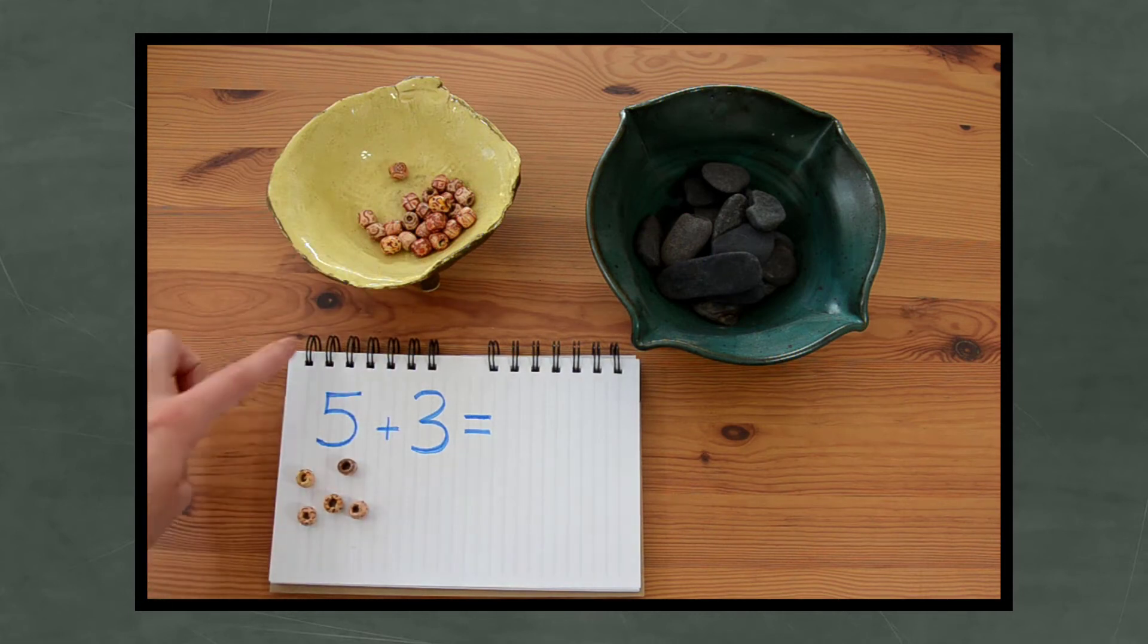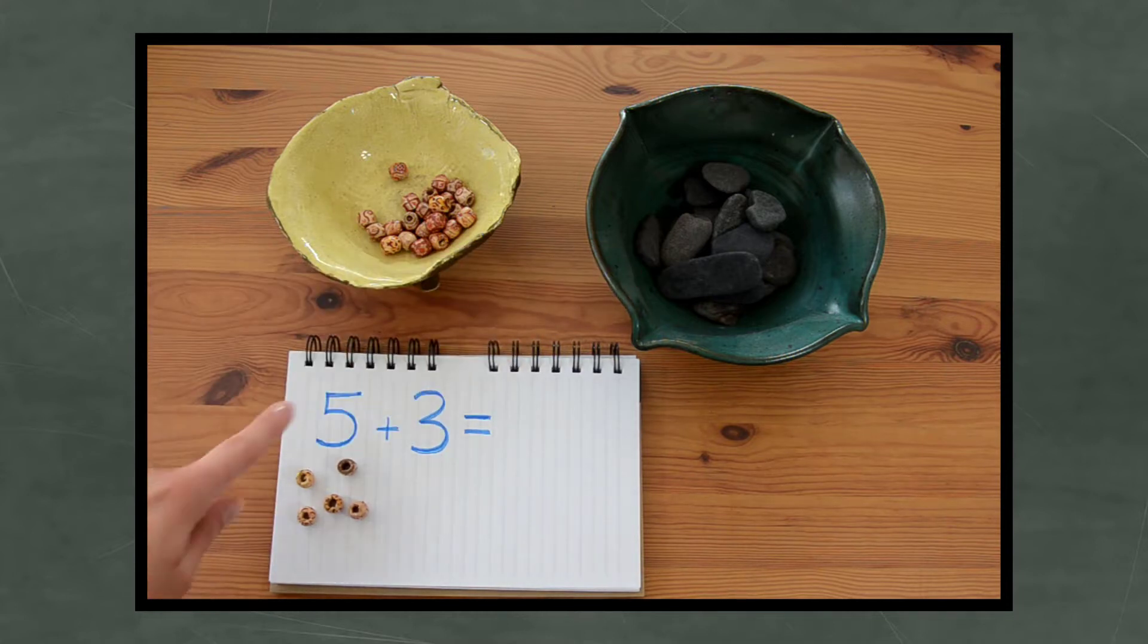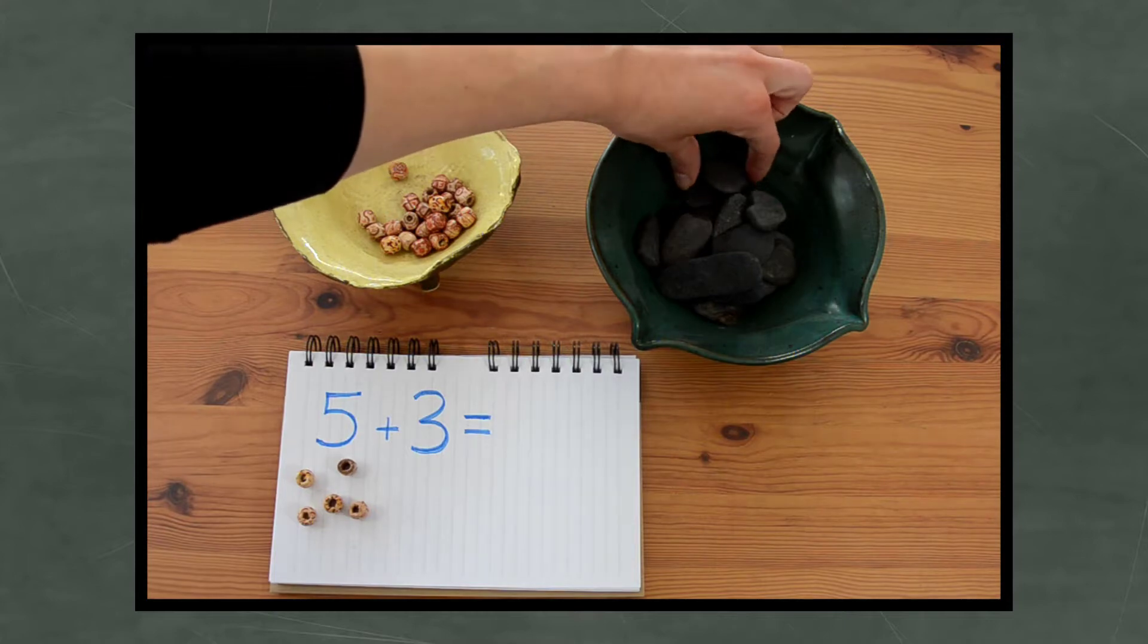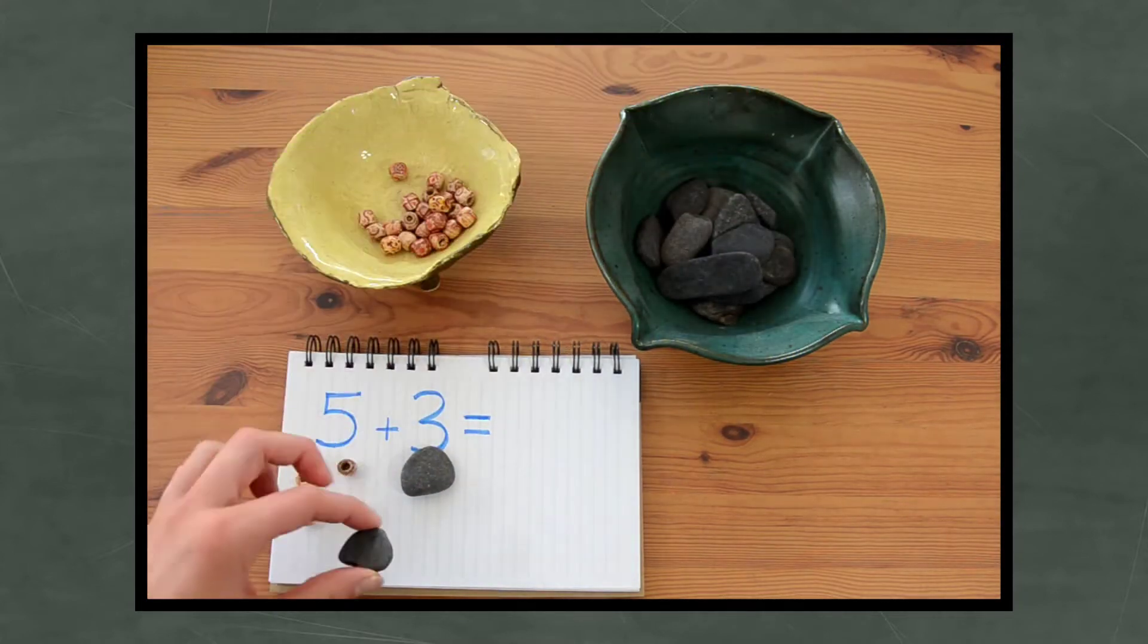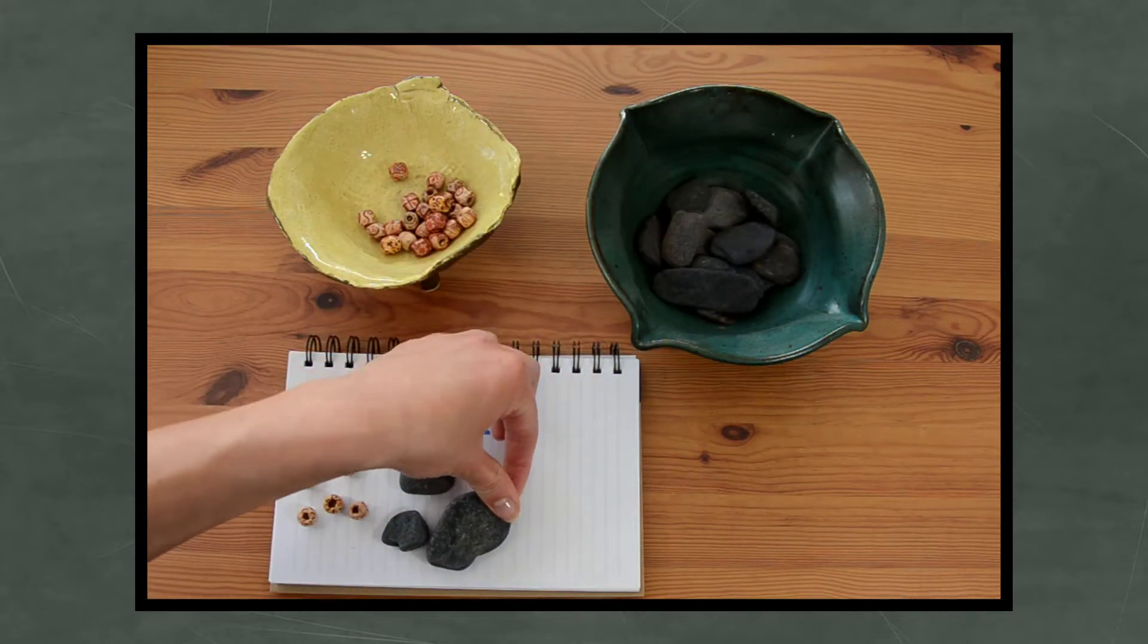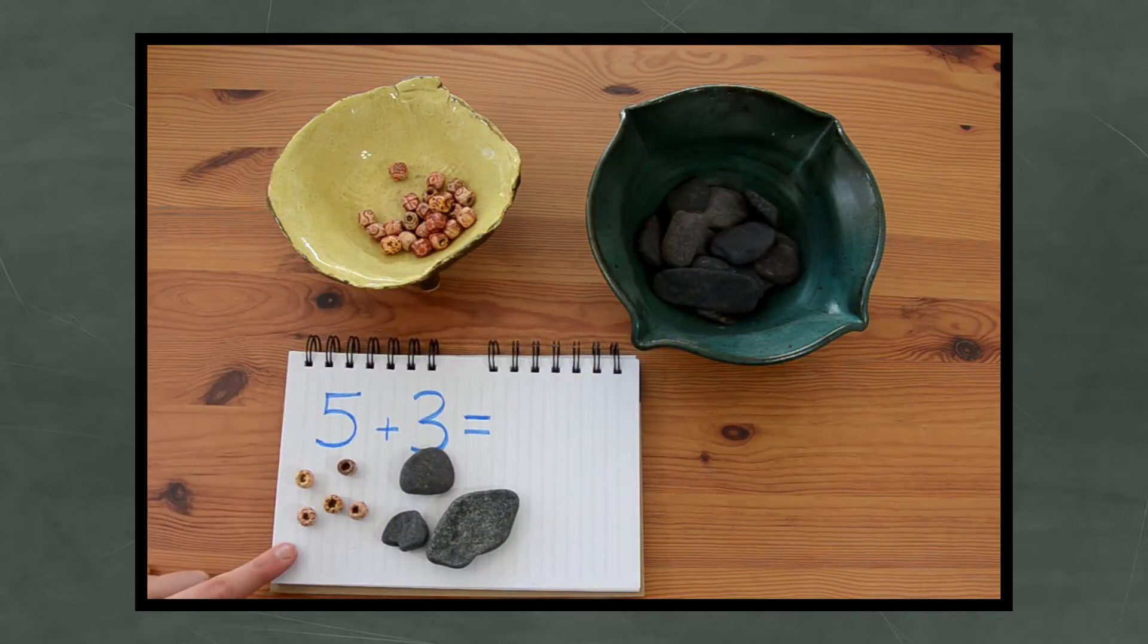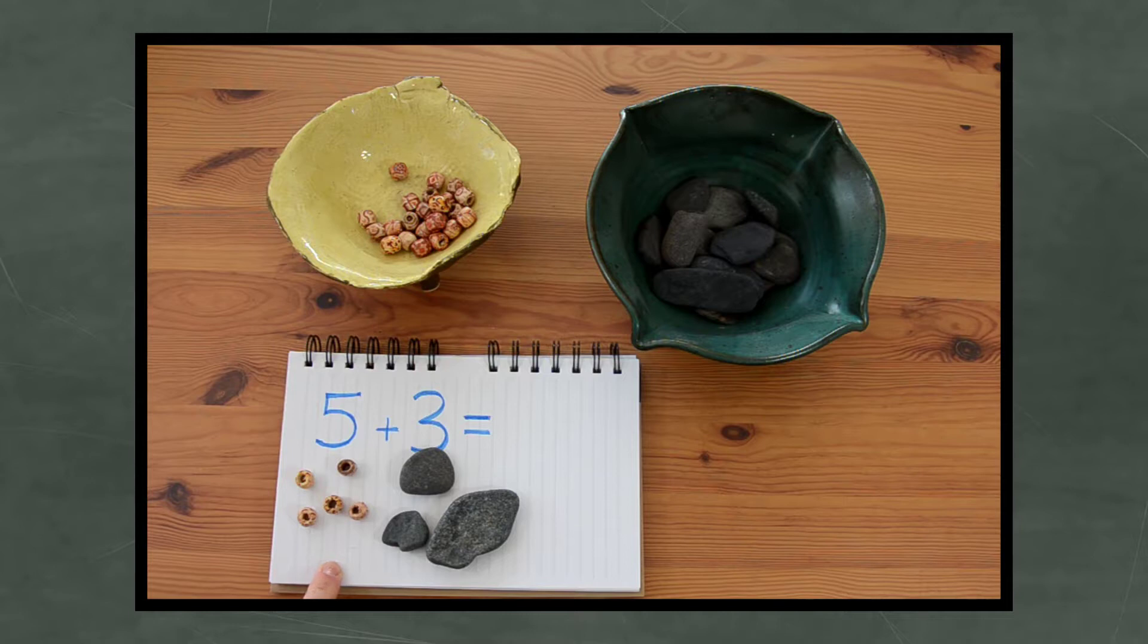I've got 5 beads and now I need 3 rocks. So 5 beads and 3 rocks or stones. 1, 2, 3. 5 beads and 3 rocks. Now I have all my loose parts together. I'm going to count how many there are all together.